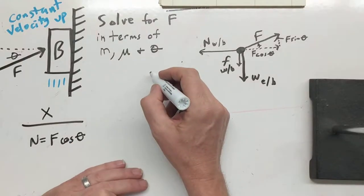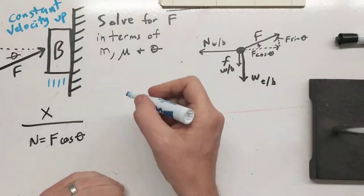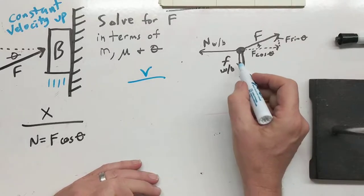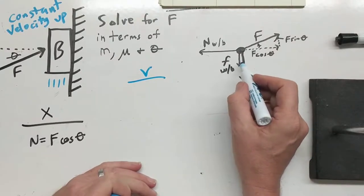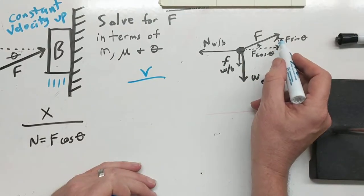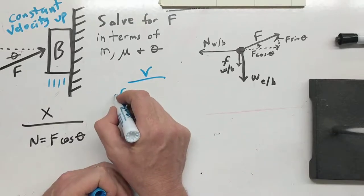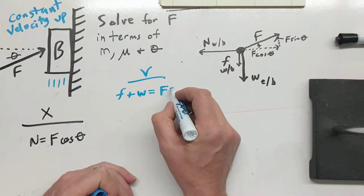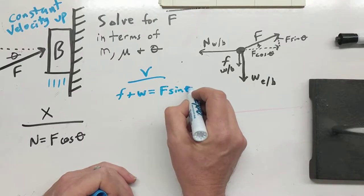So now let's look at the Y portion. Let's get another color for Y here. In the Y direction, we know that our downward forces have to be equal to our upward force, so we're going to say friction plus weight equals F sine theta.